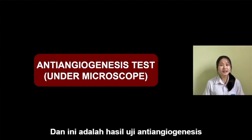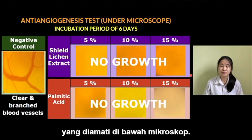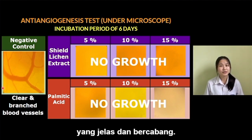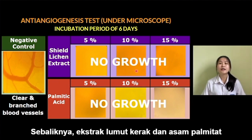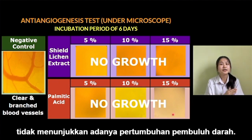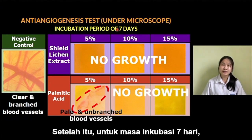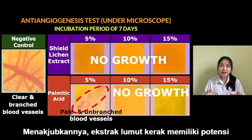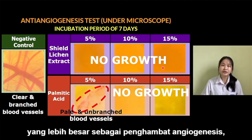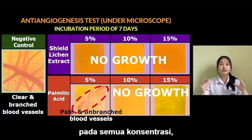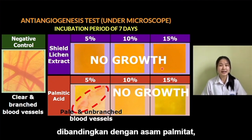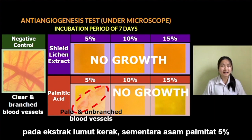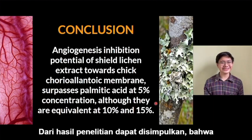And here are the anti-angiogenesis test results observed under the microscope. Negative control chicken eggs with an incubation period of 6 days show clear and branched blood vessels. In contrast, CHLK and palmitic acid did not show any growth of blood vessels. Next, for an incubation period of 7 days, a clear rapid blood vessel growth in the negative control was observed. Shockingly, CHLK has greater potential as an angiogenesis inhibitor in all concentrations compared to palmitic acid, which is proven by the absence of blood vessel growth in CHLK, while 5% palmitic acid exhibits growth of blood vessels.